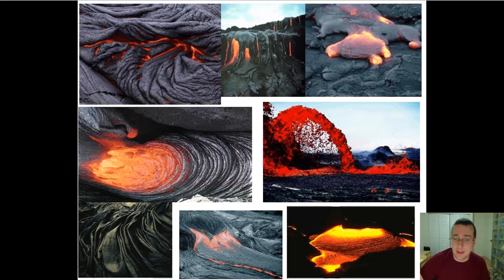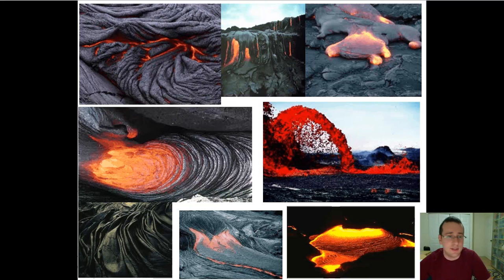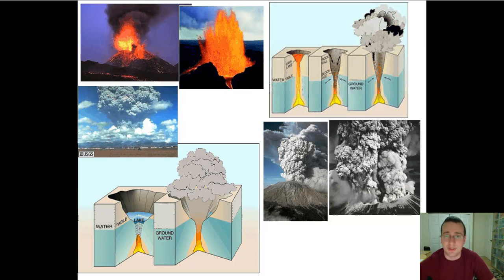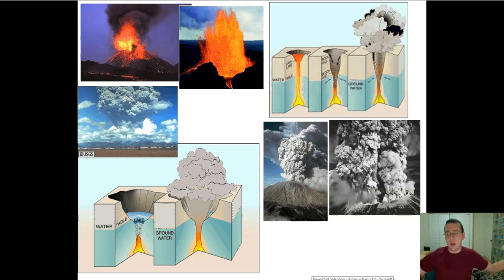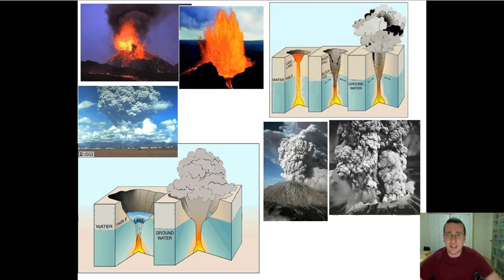On the other hand, felsic viscous volcanoes with high gas contents tend to become explosive volcanoes. We call those pyroclastic explosions. Some of them also produce lava, but the majority will make big plumes of ash, gas, and hot searing clouds of lava exploding from the center of the volcano. These are massive, massive explosions — you have to watch videos of this to really see what it looks like.